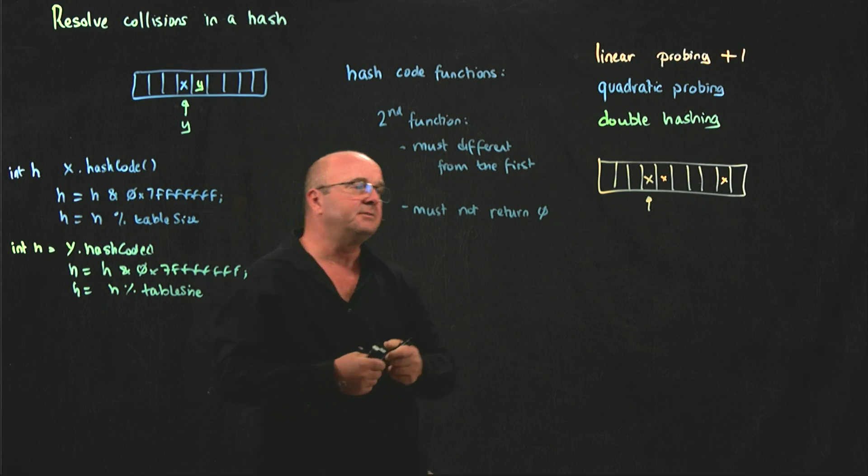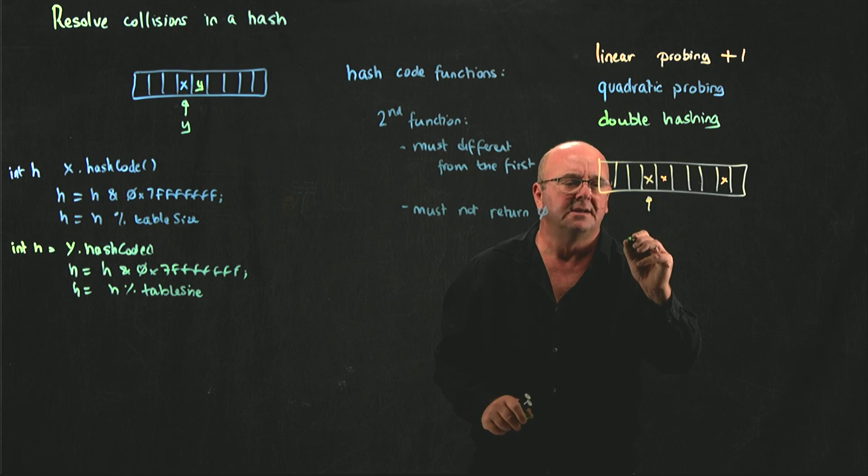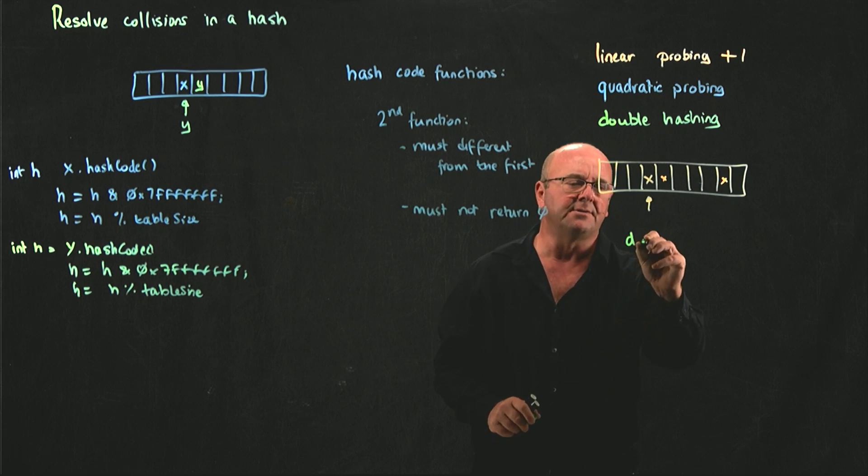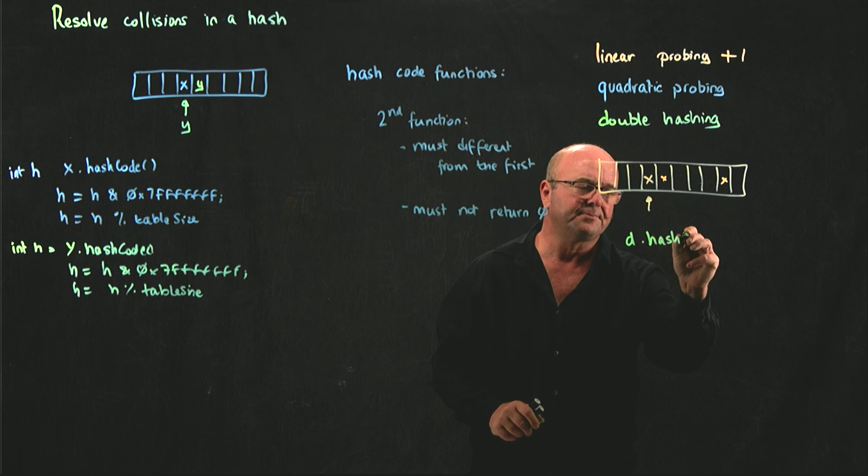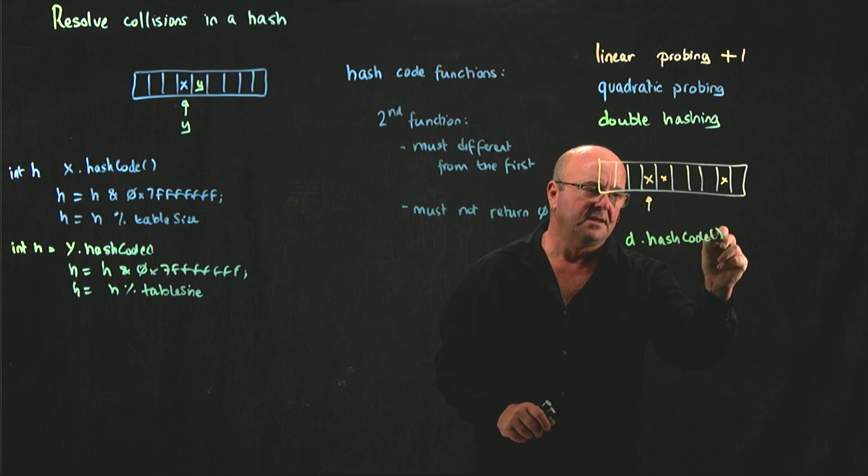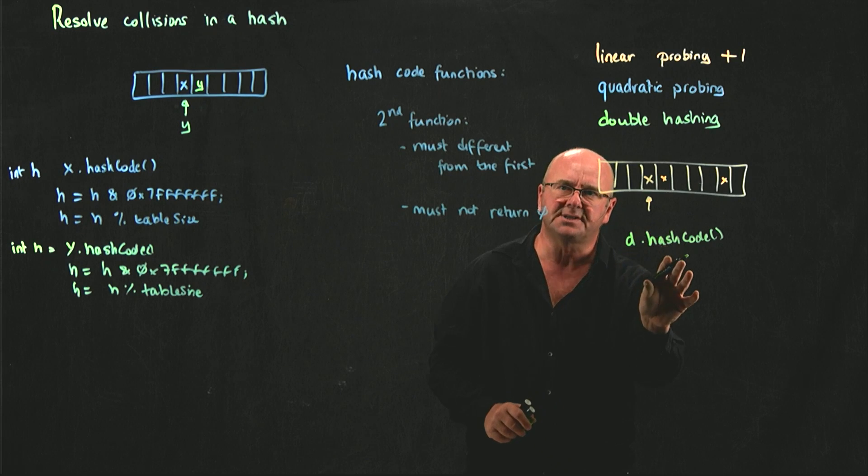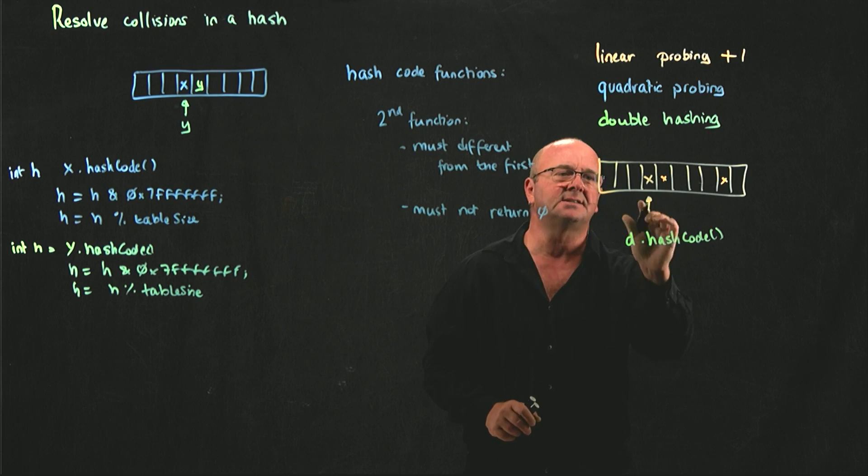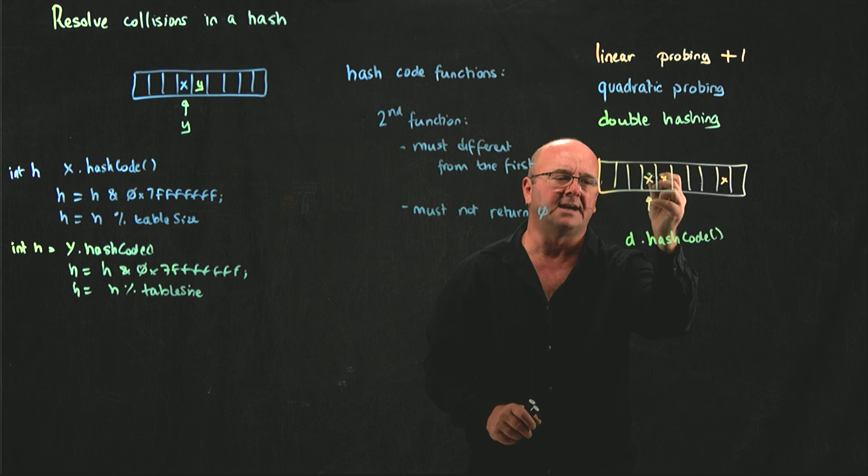So, then basically, all we do is we take our data, let's take data D, we call hash code, we get our value, we make it positive, we mod it on the table size, we go to the cell, we add our data.